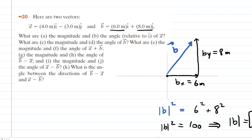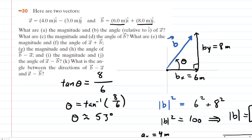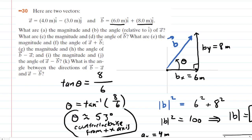For Part D, we calculate this angle theta, which is measured counterclockwise from the positive x-axis. Looking at the right triangle, the tangent of theta equals the side opposite theta — 8 meters — divided by the side adjacent to theta — 6 meters. Taking the inverse tangent of 8/6, theta is about 53 degrees. Again, it's not enough to just say 53 degrees — you must specify the direction. So it's 53 degrees counterclockwise from the positive x-axis. That is the correct answer to Part D.